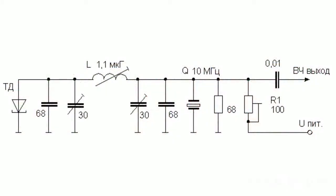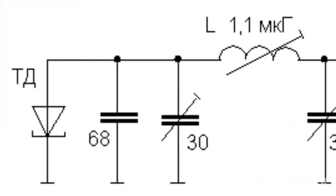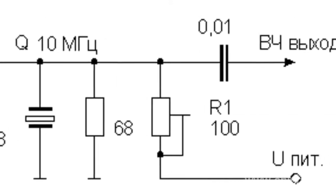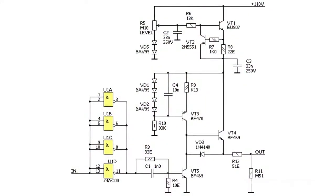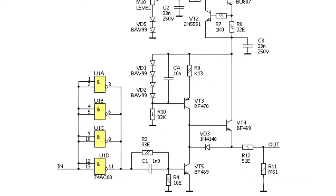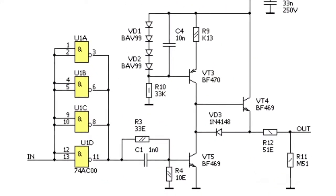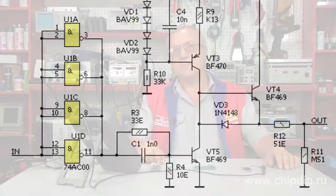Pulse amplifiers and switch mode transistors are most often used for forming pulses. This is achieved by limiting the signal strength or switching current in the output circuit. The peak chopper is the main type of such devices.